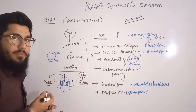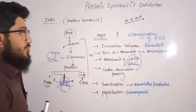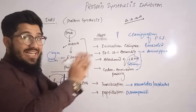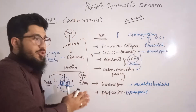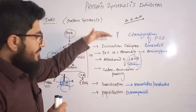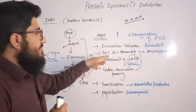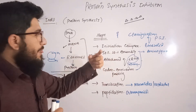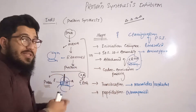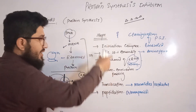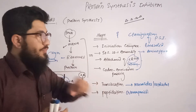Since we don't want these proteins to be synthesized — for example in bacteria — we look at the classification of protein synthesis inhibitors. We have different classes for each step: one class for the initiation complex, another for the 50S/30S assembly, we can inhibit tRNA attachment, codon-anticodon pairing, translocation, or peptidation. We can inhibit protein synthesis at any step.